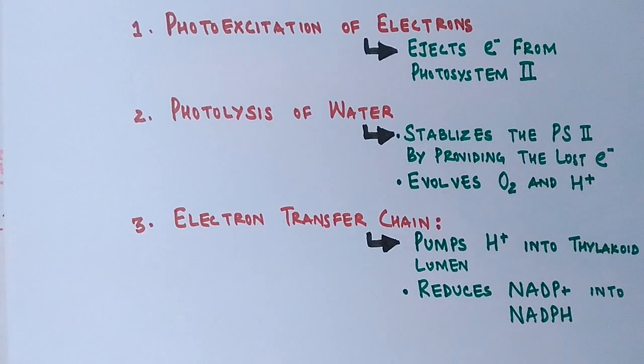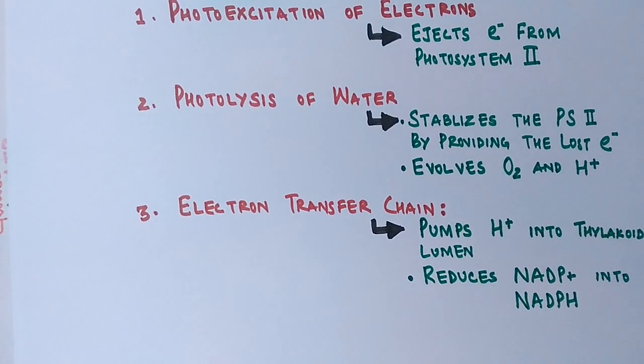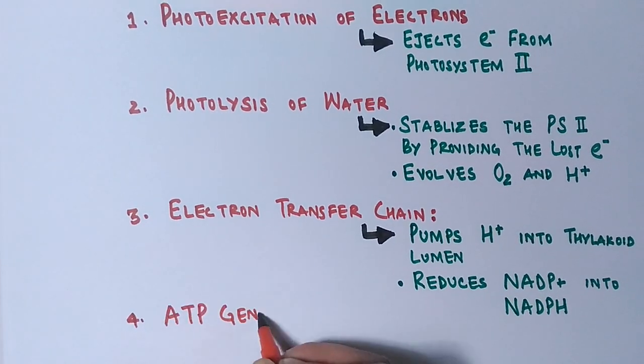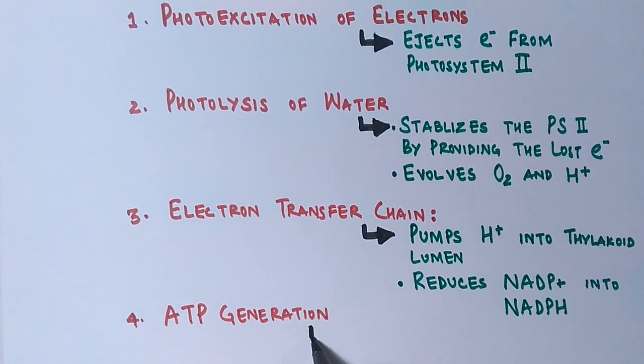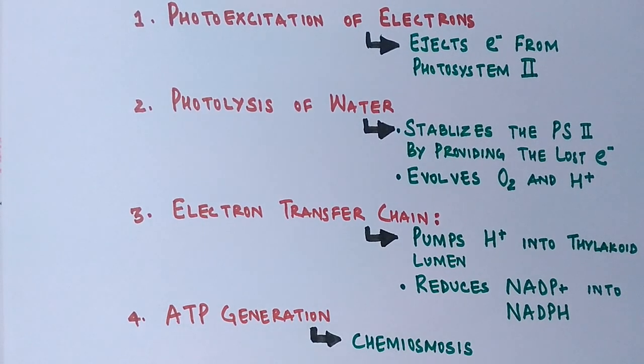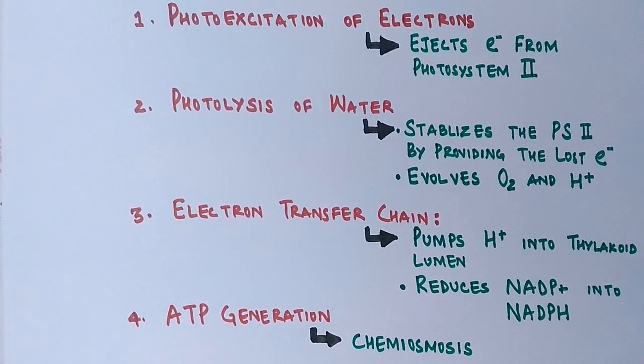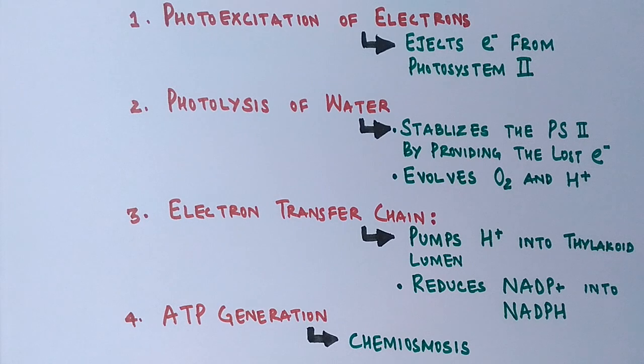And finally, the last reaction to occur in light-dependent reaction is ATP generation, where ATP molecules are generated by the process of chemiosmosis. Now let's see a detailed outlook of light-dependent reactions.